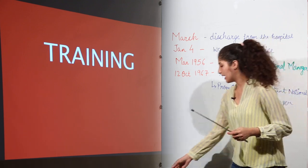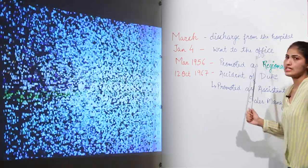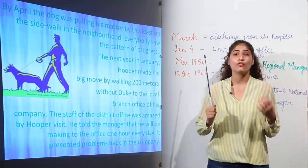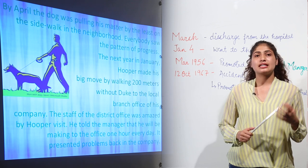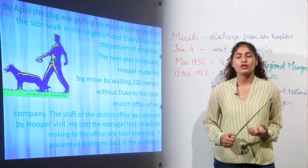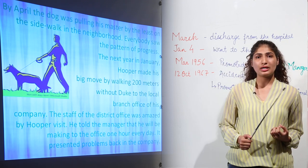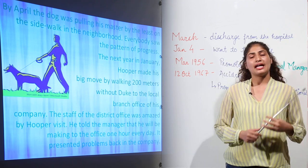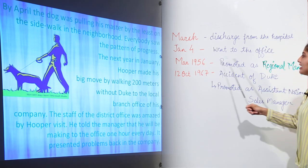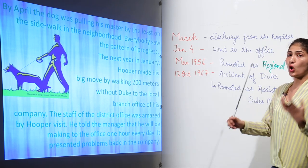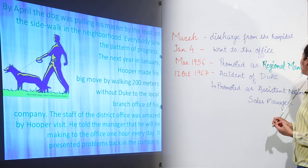Then the day came when on January 4th, he went to the office without the help of Duke. He informed his manager that he would come down and work for an hour. After a few months, he recovered his health and worked the whole day. In March 1956, because of his constant efforts, he was promoted as regional manager.